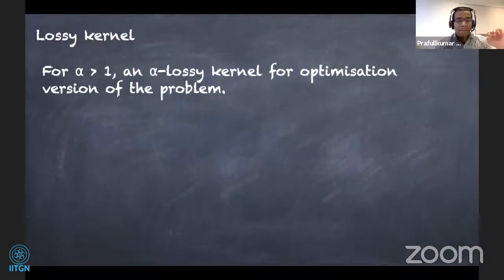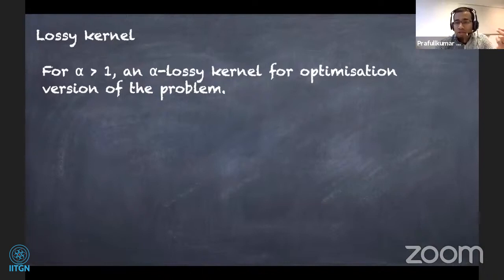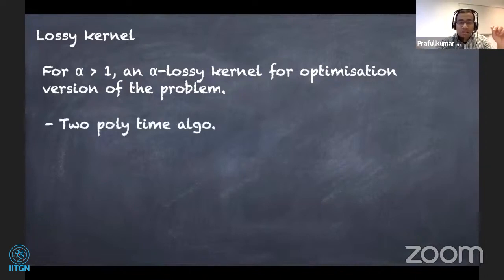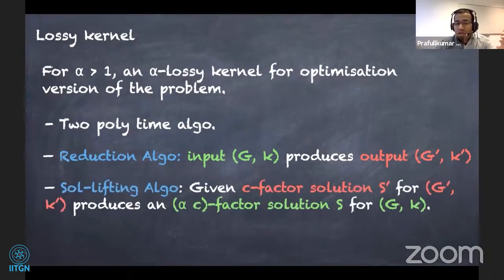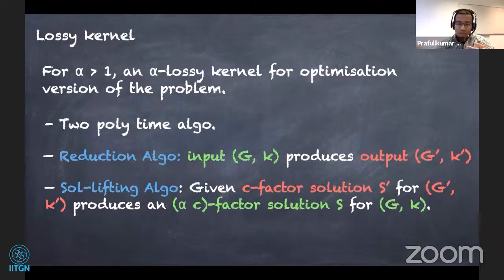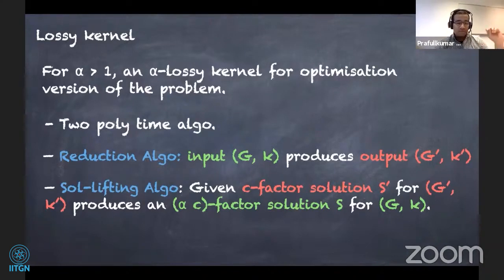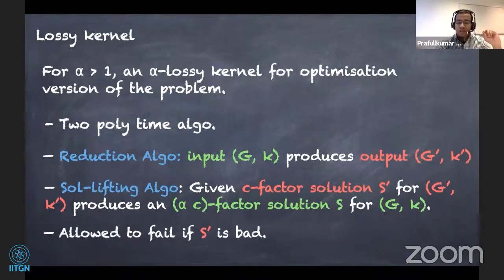As a quick refresher on lossy kernels: for any alpha strictly greater than one, we find an alpha lossy kernel for the optimization version of the problem. It consists of two polynomial-time algorithms: a reduction algorithm that takes input (G, k) and produces output (G', k'), and a solution lifting algorithm. The lifting algorithm says that if we are given a c-factor solution s' for reduced instance (G', k'), we should be able to produce an alpha·c-factor solution s for (G, k). It is allowed to fail if s' is really bad.